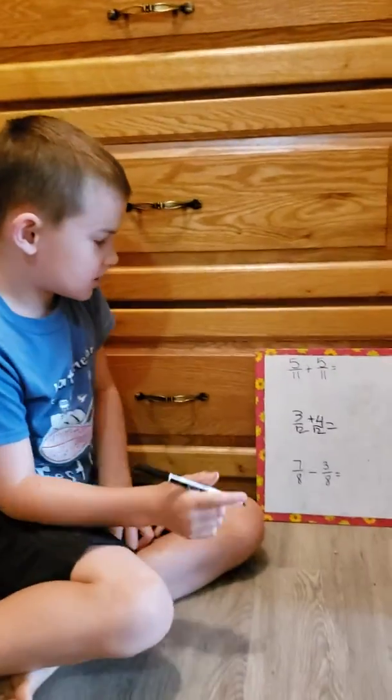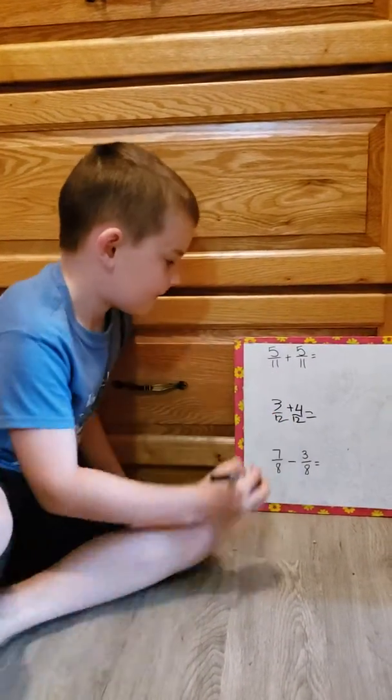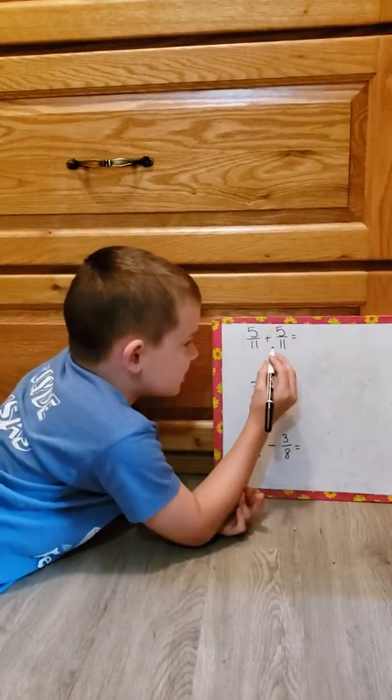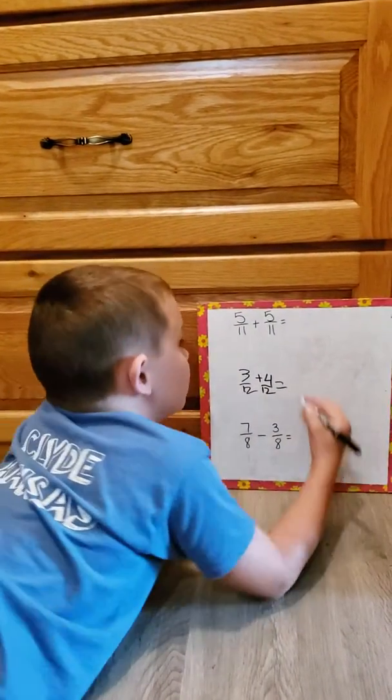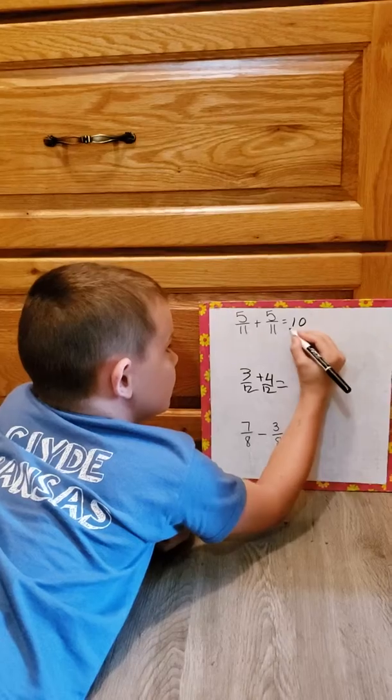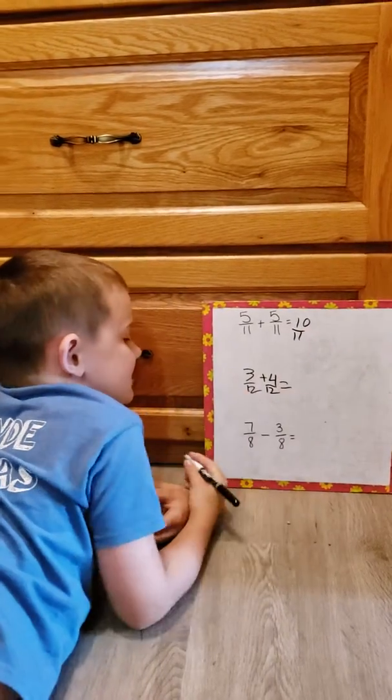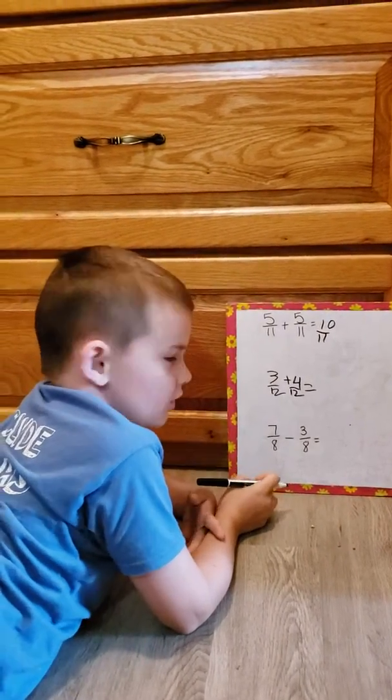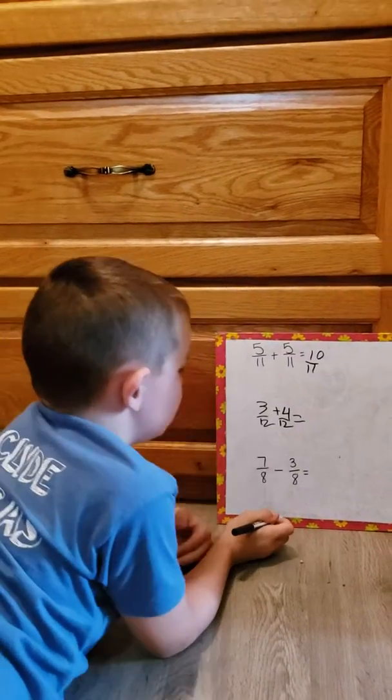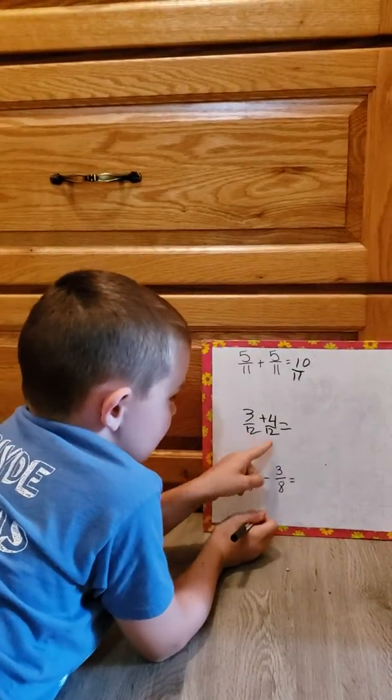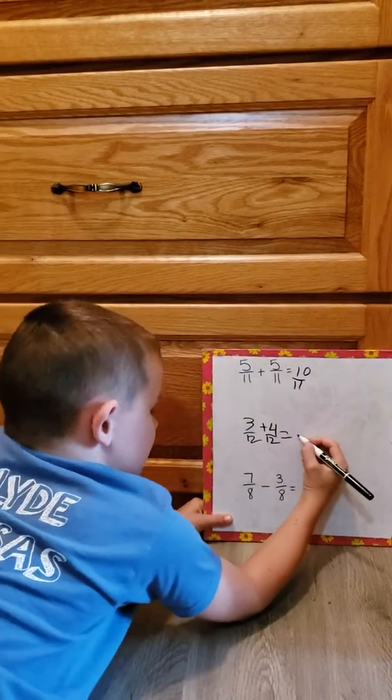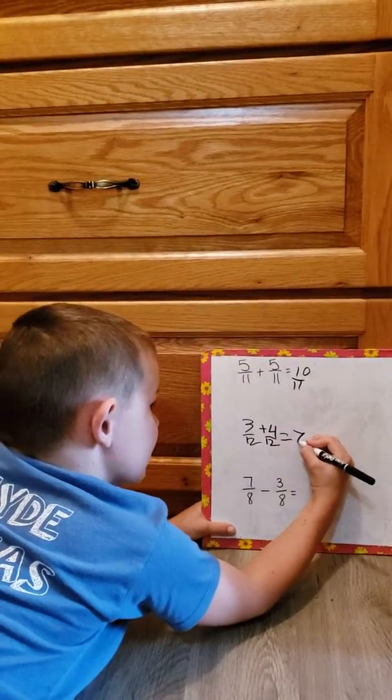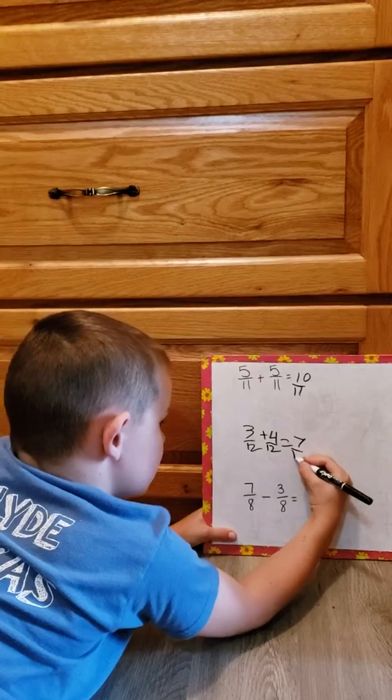So for example, 5/11 plus 5/11 equals 10/11. So write down 10/11, and that's really all it is. And then 3/12 and 4/12, it's seven. You write down 7/12.